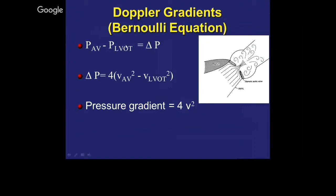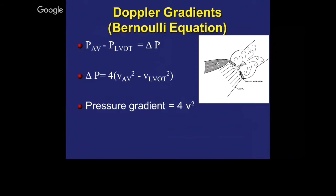The simple Bernoulli equation essentially gives the pressure across the aortic valve minus the pressure across the LVOT as the differential pressure, which boils down to 4V squared. The other way to measure severity is to planimeter the valve. For the same reason as with the mitral valve, it's sometimes difficult to see the opening well, and because opening is flow dependent, it's difficult to distinguish decreased opening due to poor ventricular failure. TEE is more superior, and dense calcification reduces the accuracy of planimetry.